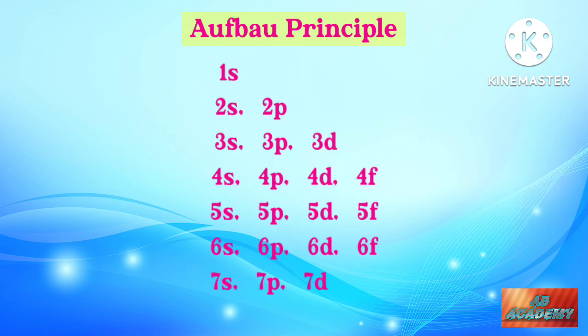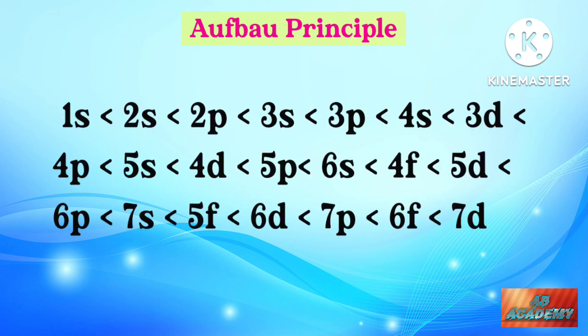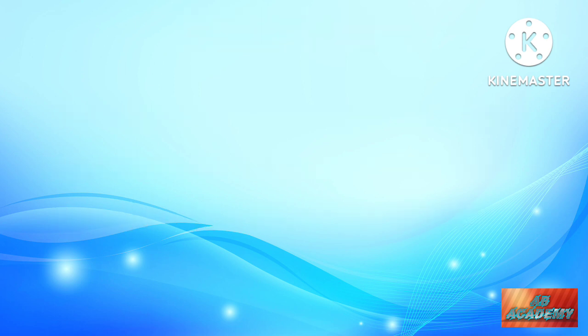The order of filling orbitals goes: electrons first go into 1s, then 2s, then 2p and 3s, then 3p and 4s, then 3d, 4p, and 5s, and so on. So the order of increasing energy of orbitals is: 1s, 2s, 2p, 3s, 3p, 4s, 3d, 4p, 5s, and so on.